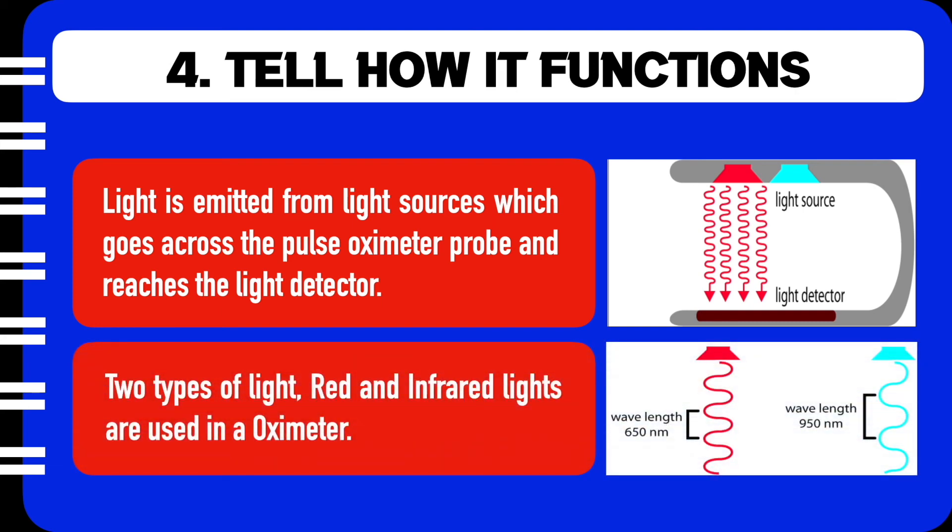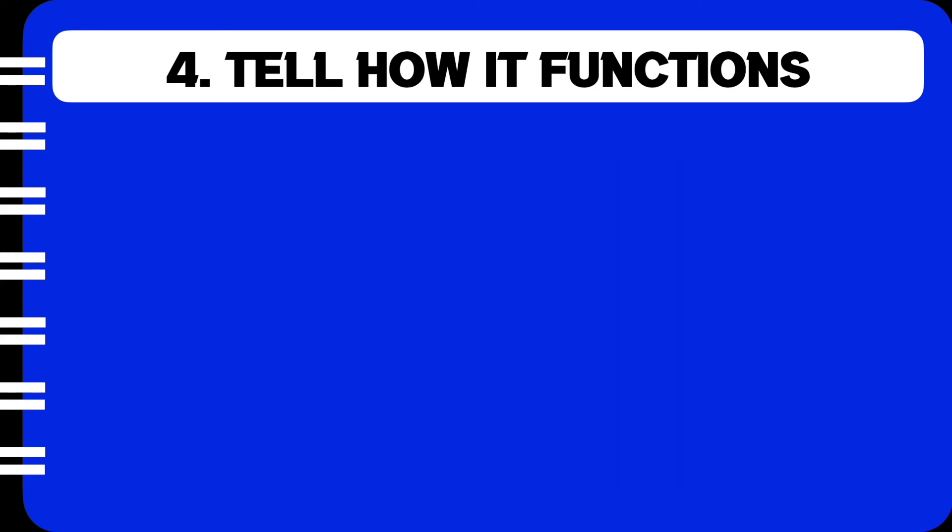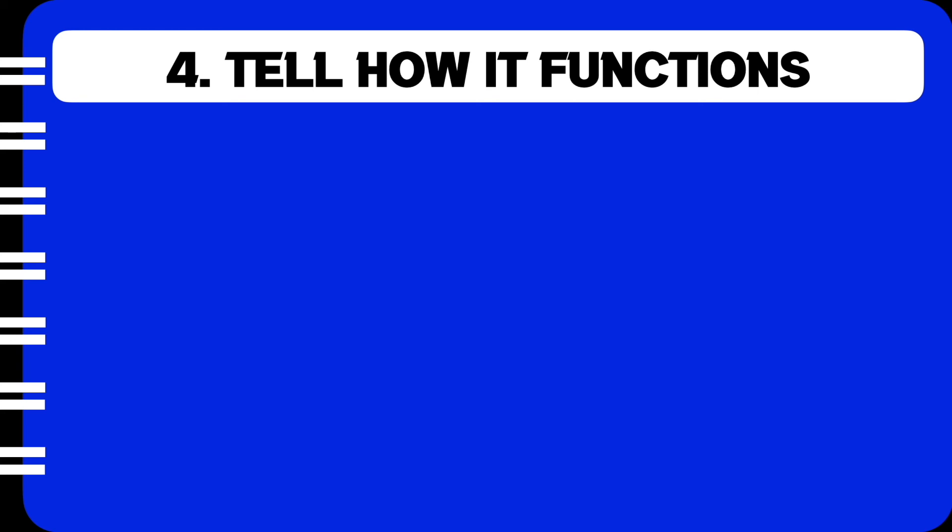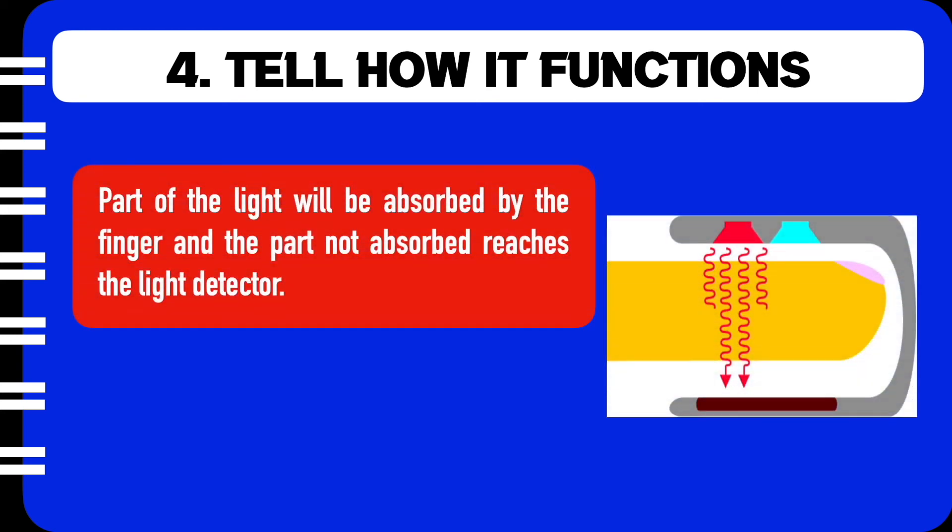Now two types of light, red and infrared lights, are used in an oximeter. When you place a finger in between the light source and the light detector, the light passes through the finger and the tissues in it to reach the detector. A part of the light will get absorbed by the finger and part which is not absorbed reaches the light detector.